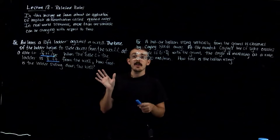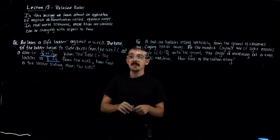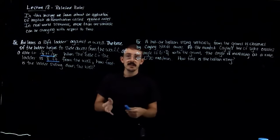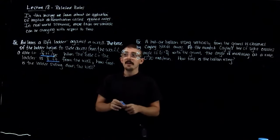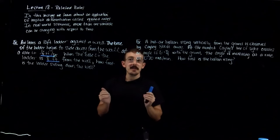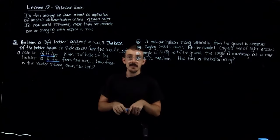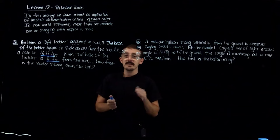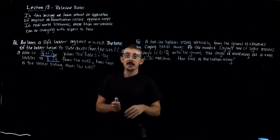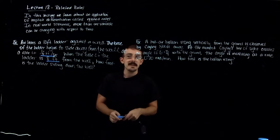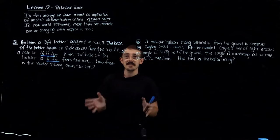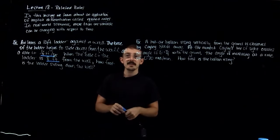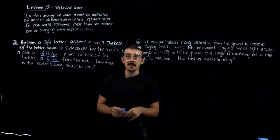We're going to be looking at examples where we consider many different variables changing at once. This section involves a lot of word problems, but I'm going to give you a step-by-step process to systematically attack these problems — especially when you encounter a new one — finding all the information you need. Practice makes perfect, so you want to have seen a lot of different examples to recognize the patterns.